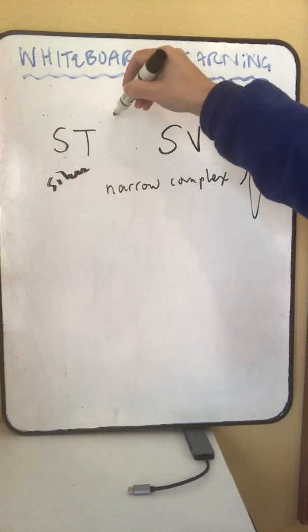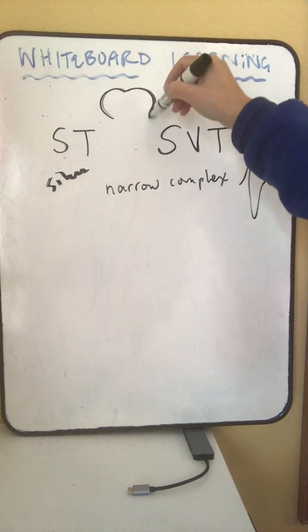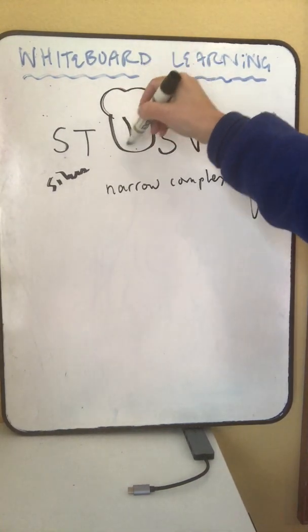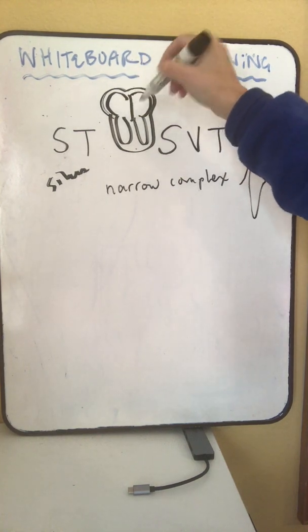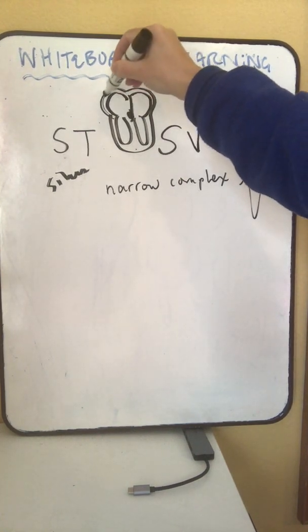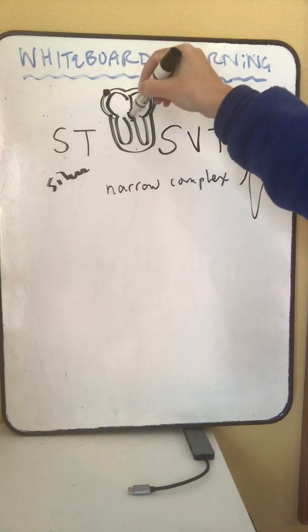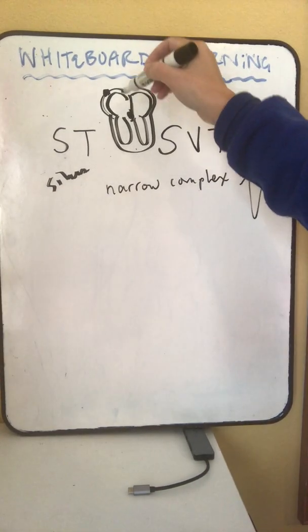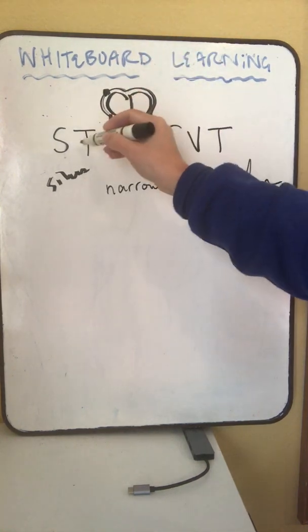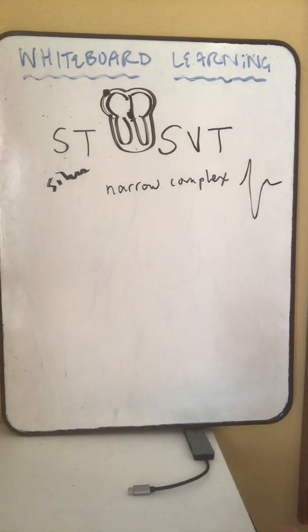What are we talking about? We're talking about arrhythmias that come from above the AV node. Anywhere between the sinoatrial node and the AV node and bundle of His. Sinus tachycardia originates from the sinus node.